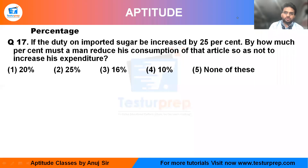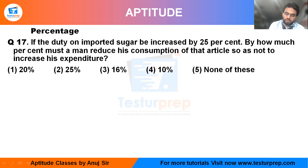Hello, welcome back to question number 17. It is quite important — the easiest and most repeated question in placement papers. If the duty on imported sugar is increased by 25%, by how much percent must a man reduce his consumption so that the expenditure does not increase — they need only the original value.